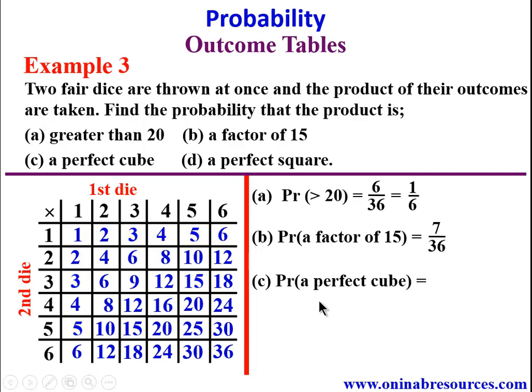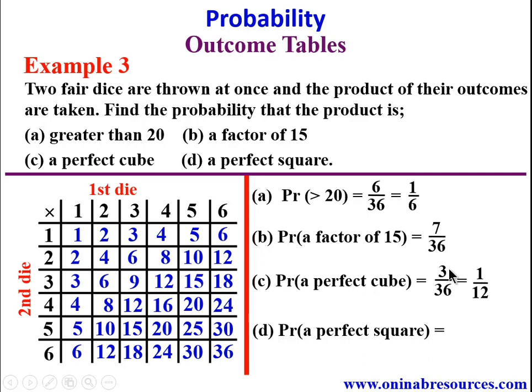For C, the probability that the product is a perfect cube. The perfect cubes relevant here are 1, 8, and 27. Looking at the outcome table: 1 is a perfect cube, 8 appears twice as a perfect cube, giving 3 entries total. The probability is 3/36 = 1/12 in simplest form.